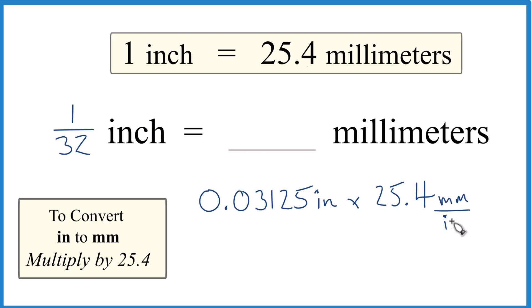So we're going to put inch underneath here. And when we do the multiplication, we have inch on the top and the bottom. Inches are gone. And we end up with this number here, which I'm just going to round to 0.79 millimeters.